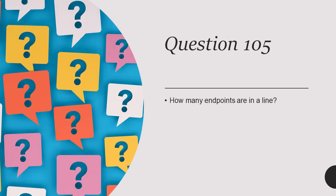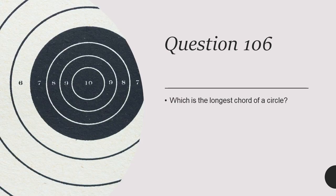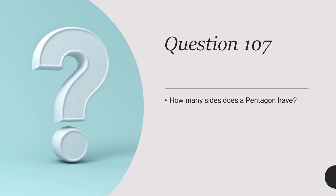Question 104: The sum of three angles of an isosceles triangle is 180 degrees. Question 105: How many endpoints are in a line? No endpoint. Question 106: Which is the longest chord of a circle? Diameter.